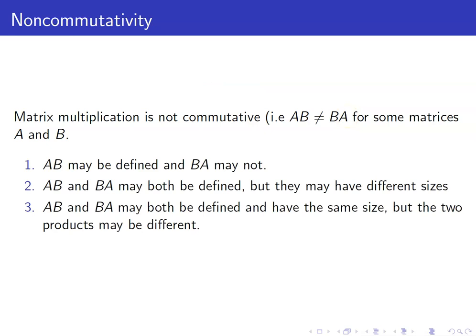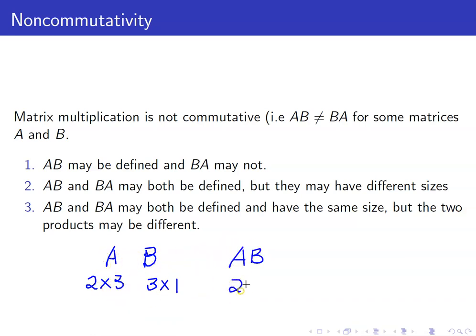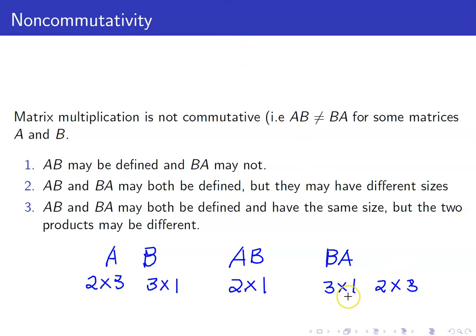When will this happen? First, AB may be defined while BA may not. For example, if A is 2 by 3 and B is 3 by 1, then AB is defined and will be a 2 by 1 matrix. However, BA is not defined because B is 3 by 1 and A is 2 by 3 — these inner dimensions are not the same, so BA is not defined.